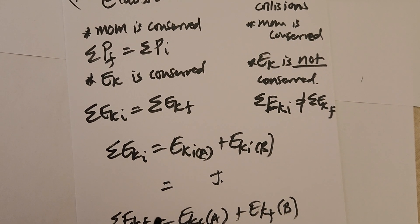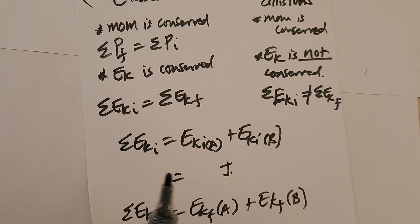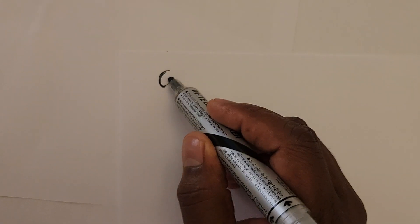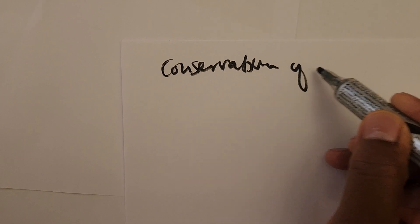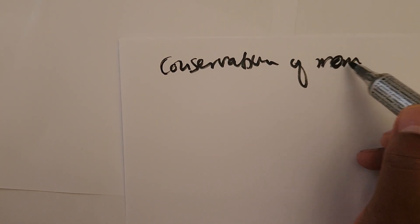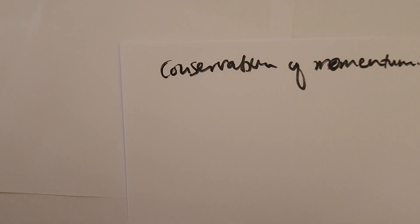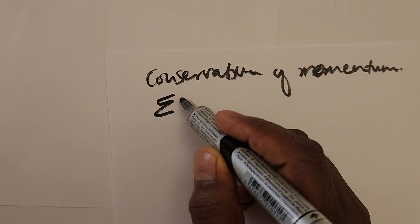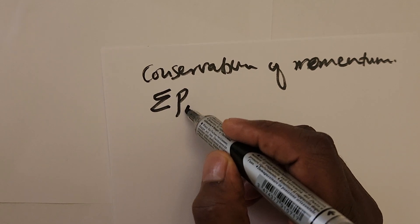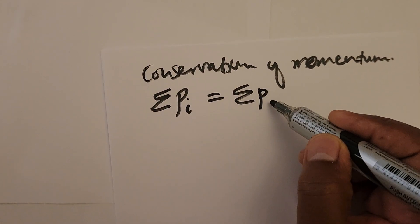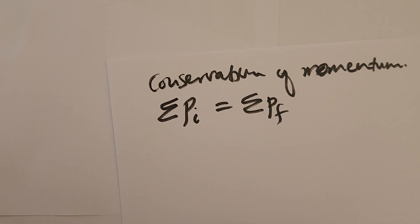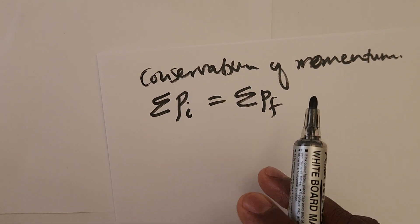Now let's talk about conservation of momentum. When we say momentum is conserved, we mean that the total momentum before — the initial momentum — must be the same as the total momentum after. That is conservation of momentum. However, this only happens under a certain condition.